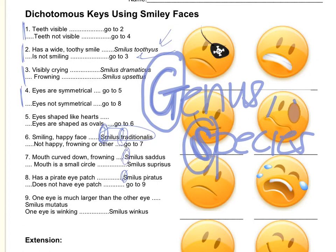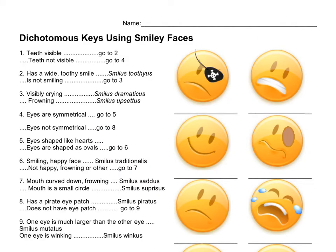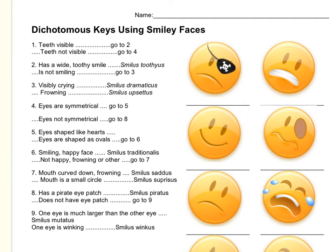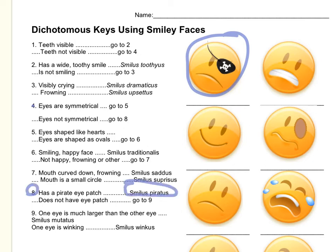We're going to try to solve this dichotomous key and identify these smiley faces. Let's try to identify this guy with the patch over his eye. Teeth visible — go to two. Well, there's no teeth visible. Teeth not visible — go to four. Eyes are symmetrical? The patch makes his eyes not symmetrical. So it says go to eight: has a pirate eye patch. There we go — this is the one. So he is Smilus paratus. Notice I capitalized the first word: Smilus paratus.